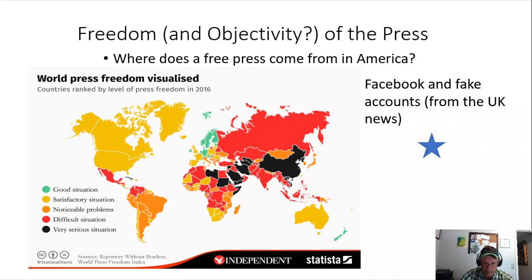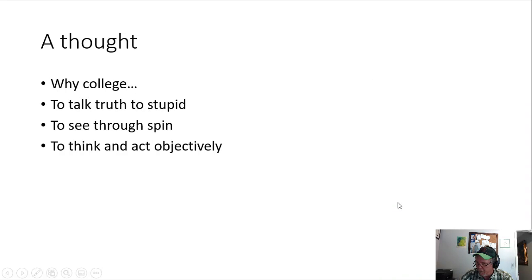The greens and yellows are that way because freedom of the press and freedom of the people are tied together. This link takes you to an article from England about Facebook and fake accounts. A lot of what's spinning around on social media is done by bots from China or Russia, just to show further discontent about vaccinations in America — and people have no media literacy to see through it. What is media literacy? We'll come back to that. If you watch the idealist versus the realist video, why college — to talk truth to stupid, because there's a lot of stupid out there. To be informed, so when you hear something that's utter bunk, you go 'yeah, right.'